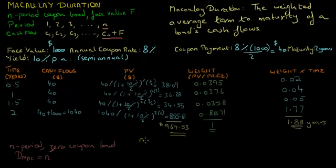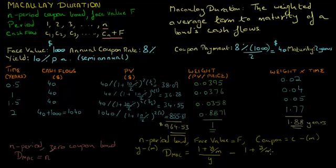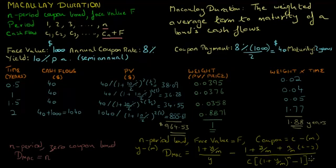We can generalize the argument as follows. If we have an N-period bond with face value F, annual coupon rate C where the coupon is paid M times a year, and yield to maturity Y also compounded M times a year, then the Macaulay Duration equals: (1 + Y/M) divided by (Y/M) minus (1 + Y/M), plus N/M times (C - Y), all divided by C times (1 + Y/M) to the power N minus 1, plus Y.